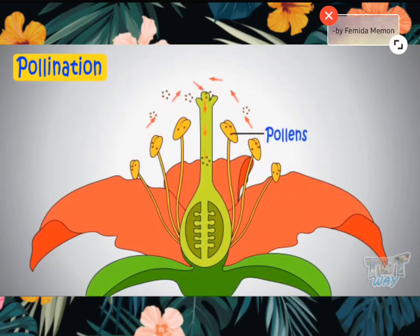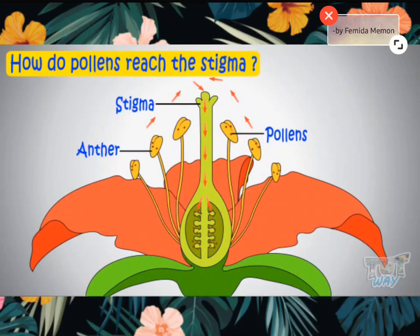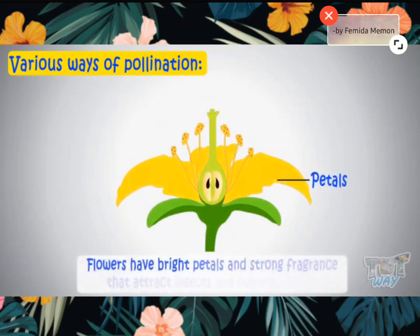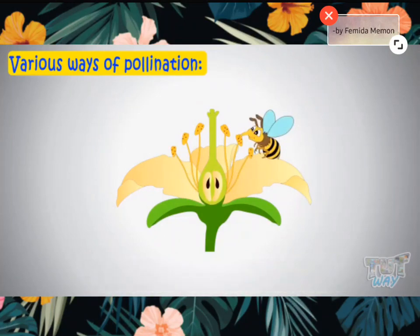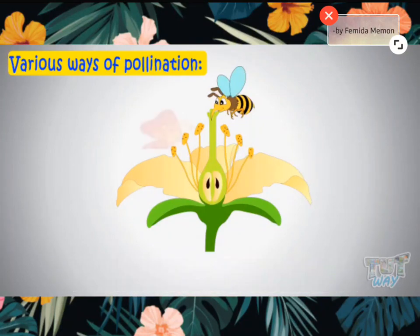Now let's see what is pollination. Pollination is a process by which pollen is transferred from the anther, that is the male part, to the stigma, which is the female part of the plant, thereby enabling the process of fertilization and reproduction. Flowers have bright petals and strong fragrance that attract insects and other animals. Flowers have a thin, nutritious, honey-like liquid called nectar inside them that acts as food for many insects.